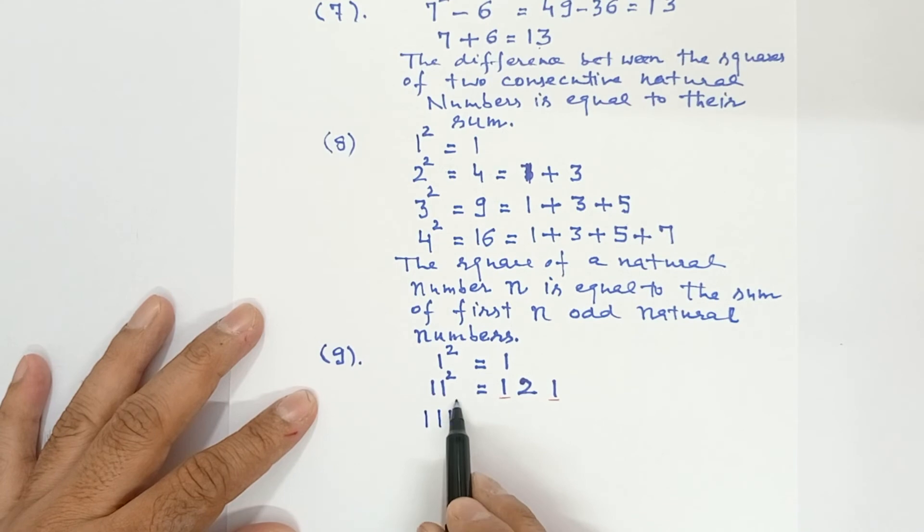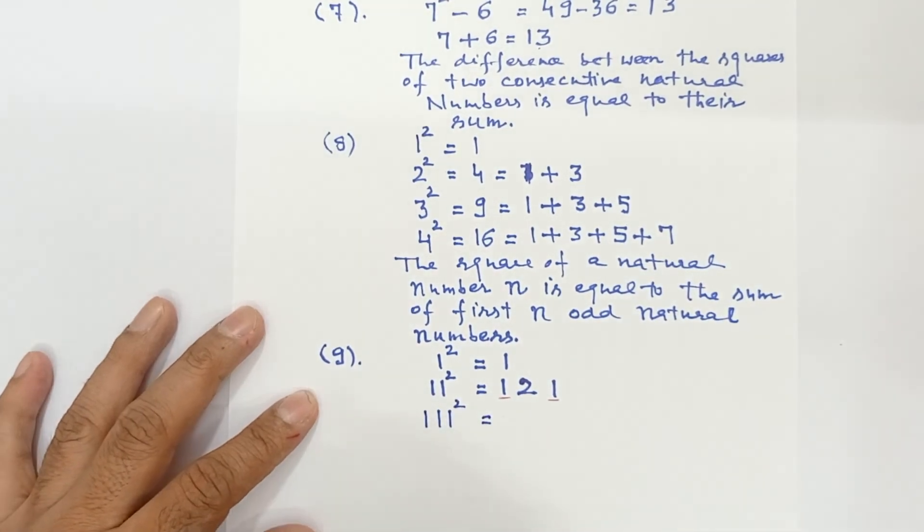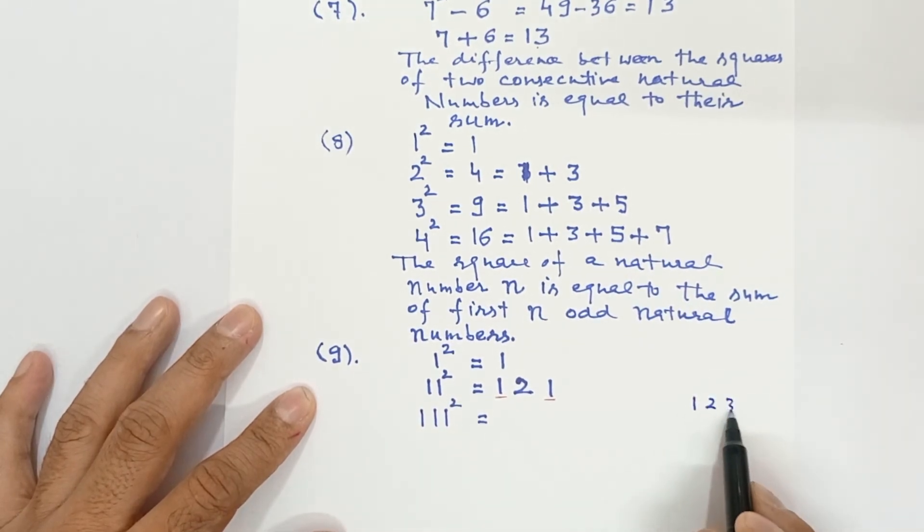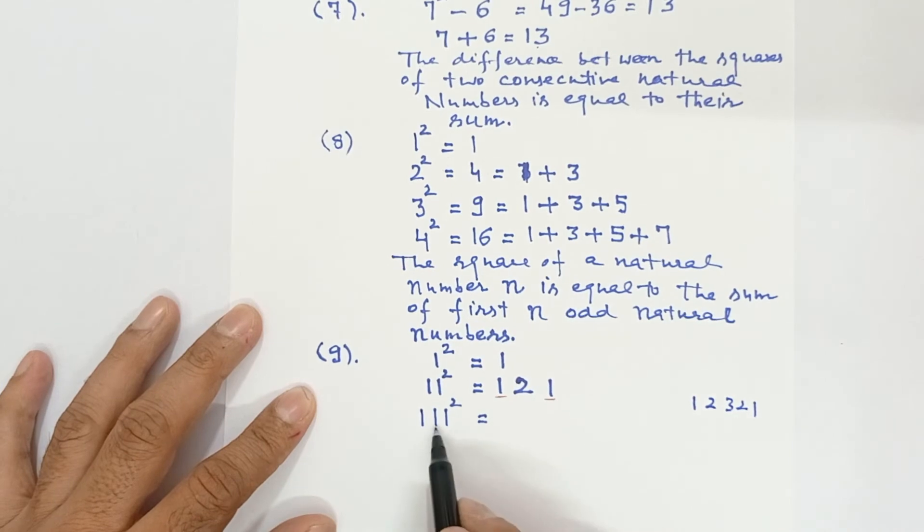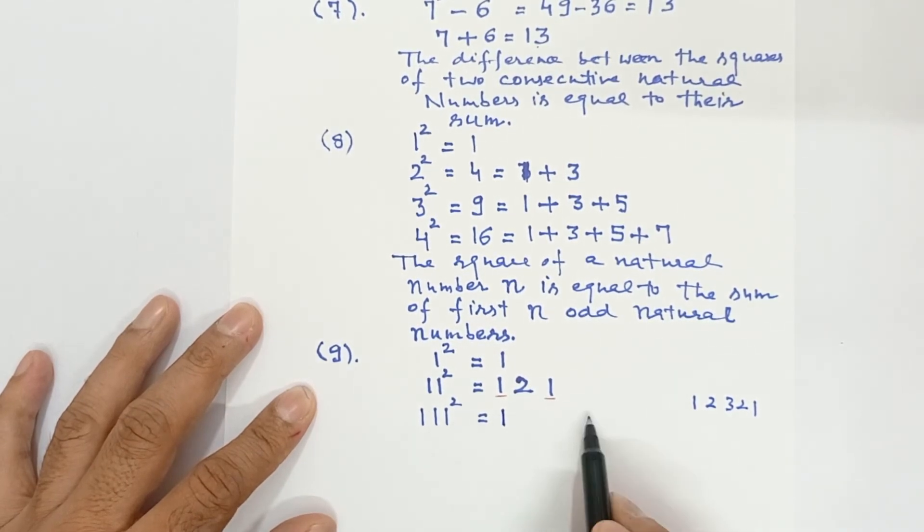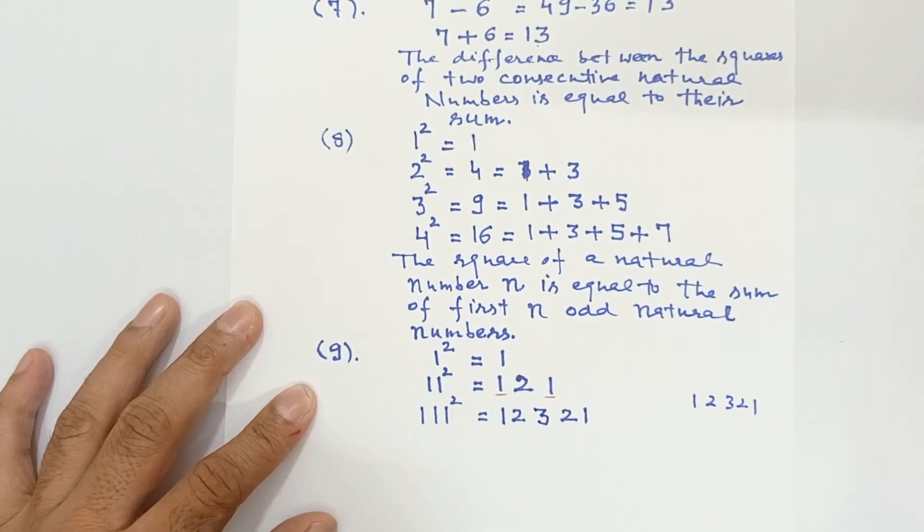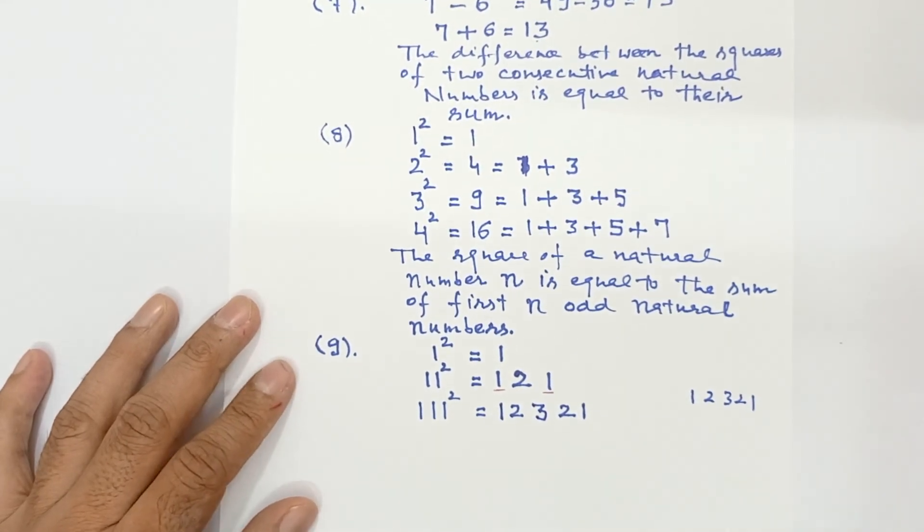1, 1, 1 whole square, so 1, 1, 1 whole square is 12,321. How has it become? First I have written 1, then 1 in the end. So 1 plus 1, 2. Add this 1 plus 1, 2. Then 1 plus 1 plus 1, 3. So this is again a peculiar pattern.